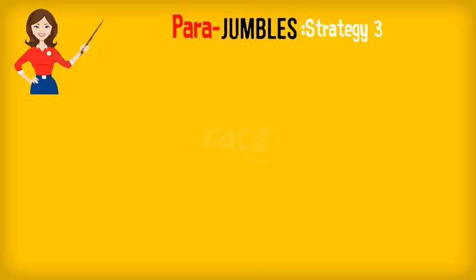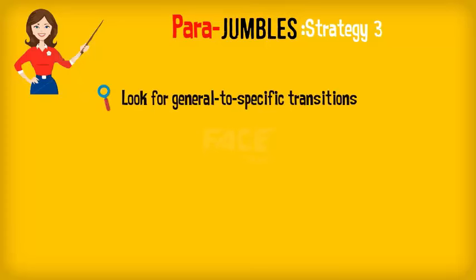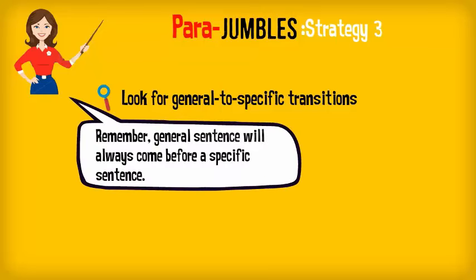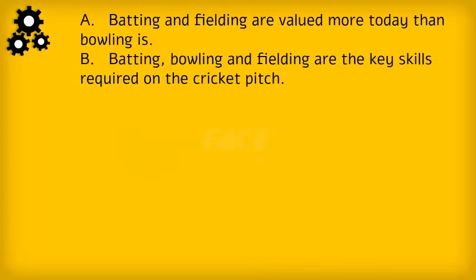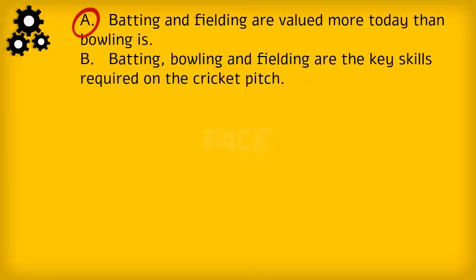The third strategy in solving para-jumbles is looking for general to specific transition. A general sentence will always come before a specific sentence. In this example, B is the general sentence introducing the three elements — batting, bowling, and fielding — while A is the specific sentence which talks about batting and fielding in particular. Therefore, B will come before A.